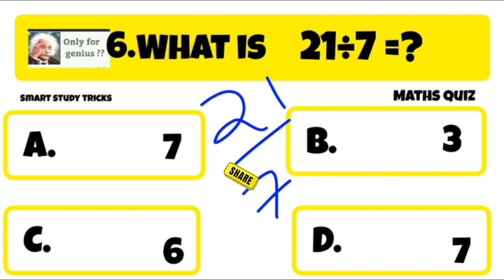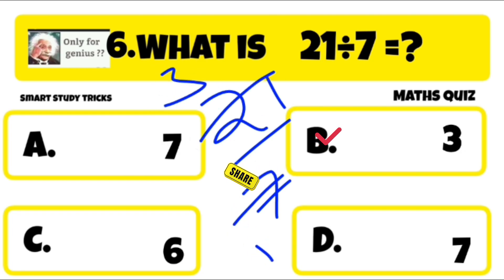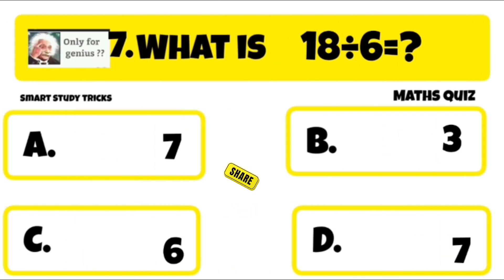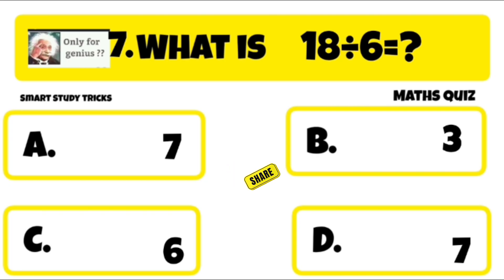Quiz number 6 is: what is 21 divided by 7? 21 divided by 7 is equal to 3. Right answer is B: 3.